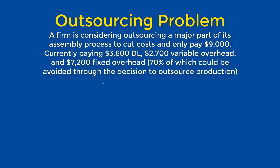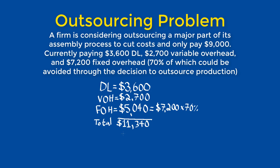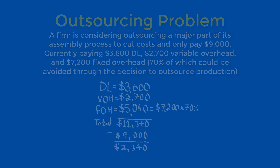The relevant costs in this problem include all of the direct labor expense, all of the variable overhead expense, and $5,040 of the fixed overhead expense because of the 70% of it which is avoidable. Therefore, the total relevant cost is $11,340, and since the cost of outsourcing is $9,000, that means potential savings of $2,340 could be generated.